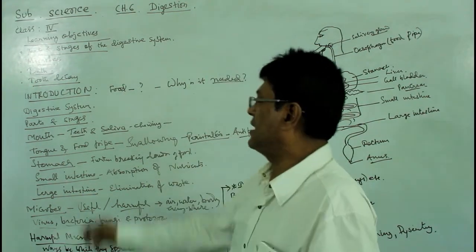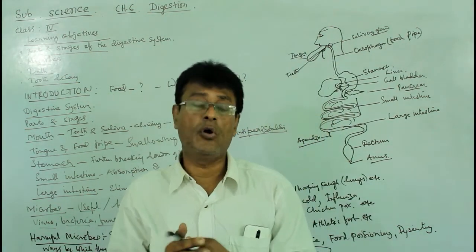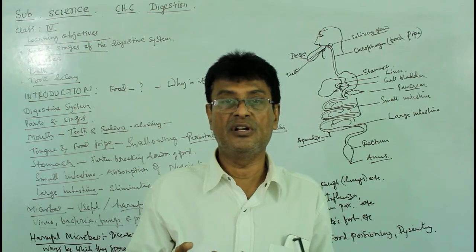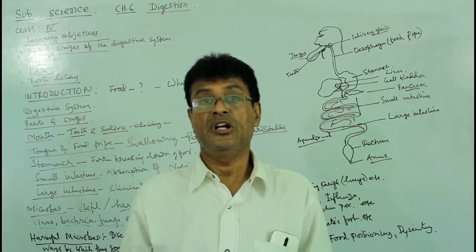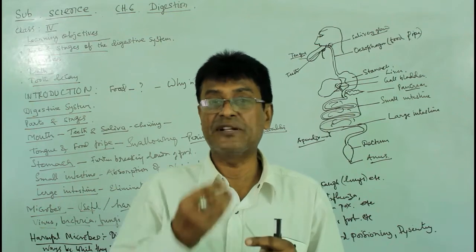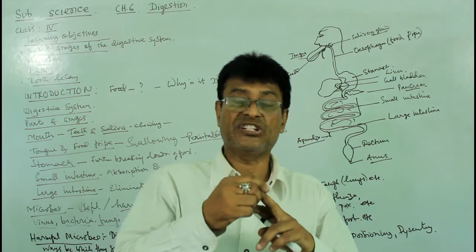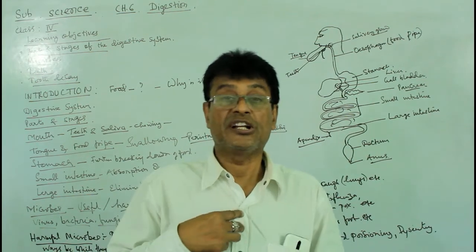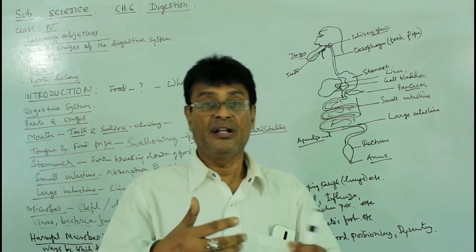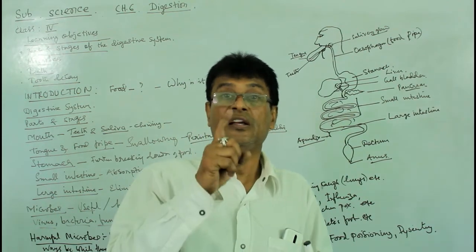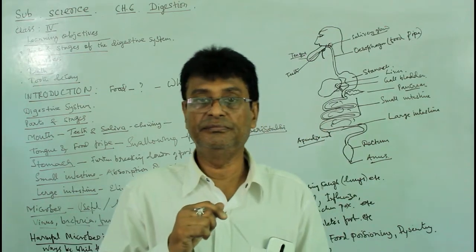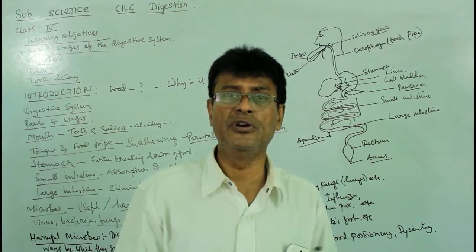All organisms need food, whether unicellular or multicellular. Food is required to continue nutrition. Nutrition follows five stages. The first is ingestion — putting food into the mouth. The second is digestion — simplification of food, because our body cannot take food directly into the bloodstream; it has to be converted into liquid form and sent to various parts of the body.